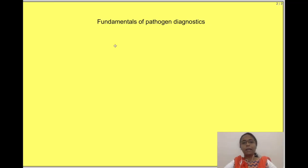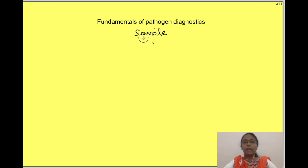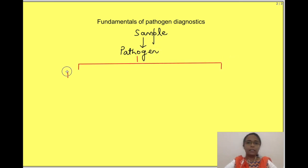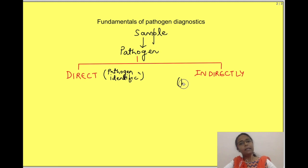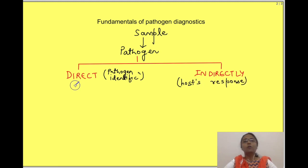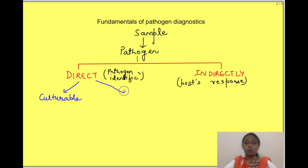For detecting the pathogens which have infected our body, we need to get an appropriate sample from the body and establish the presence of the pathogen in the sample either directly or indirectly. Direct methods mean we directly see either the whole pathogen or recognize a part of it, and indirect means we assess the host response to the pathogen.